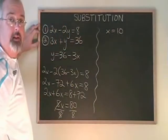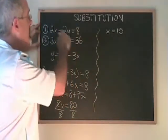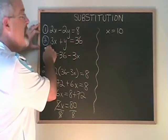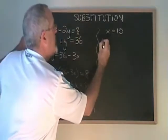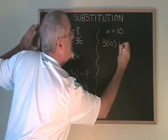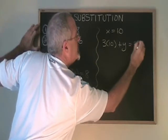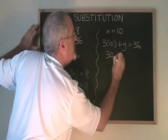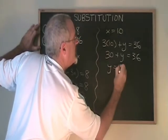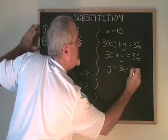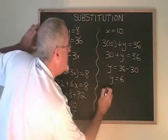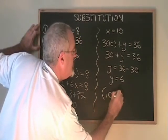Now I just have to substitute x equals 10 into either of the original equations to find y. This time I'm going to use equation 2. 3 times 10 plus y equals 36. 30 plus y equals 36. y equals 36 minus 30. y equals 6. My answer is x equals 10, y equals 6.